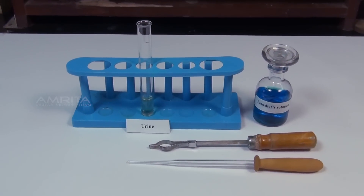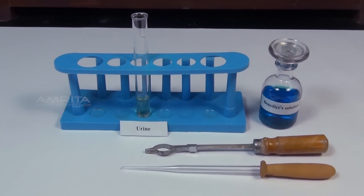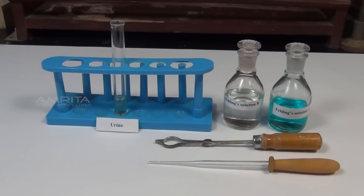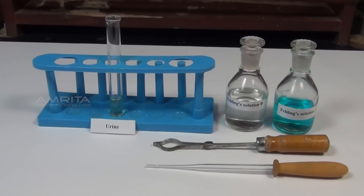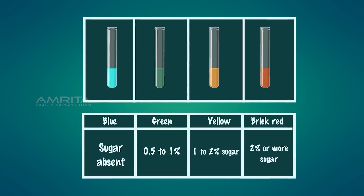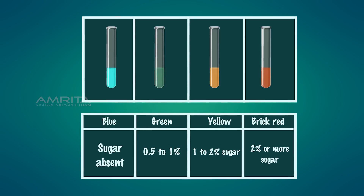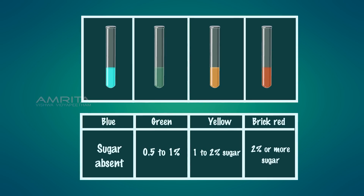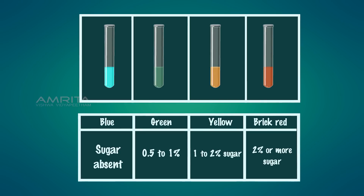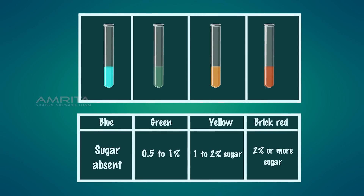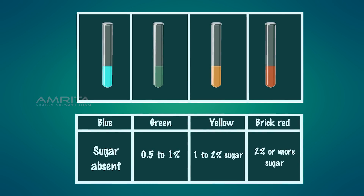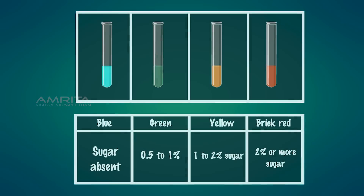Generally, Benedict's and Fehling's tests are used to detect the presence of sugar in urine. These tests give coloured precipitates such as green, yellow, and brick red depending on the concentration of sugar present in urine.